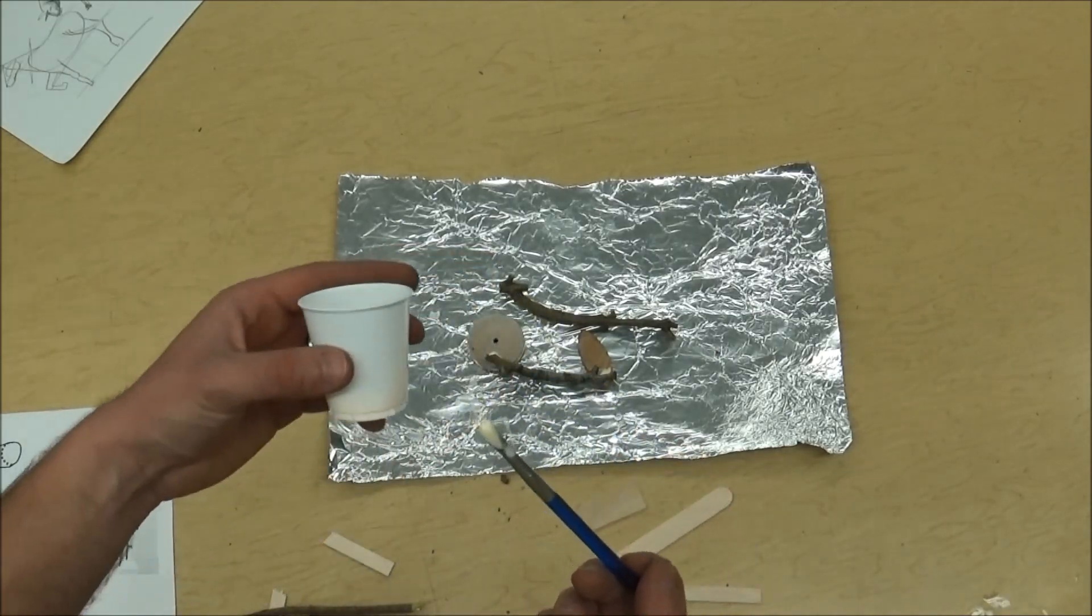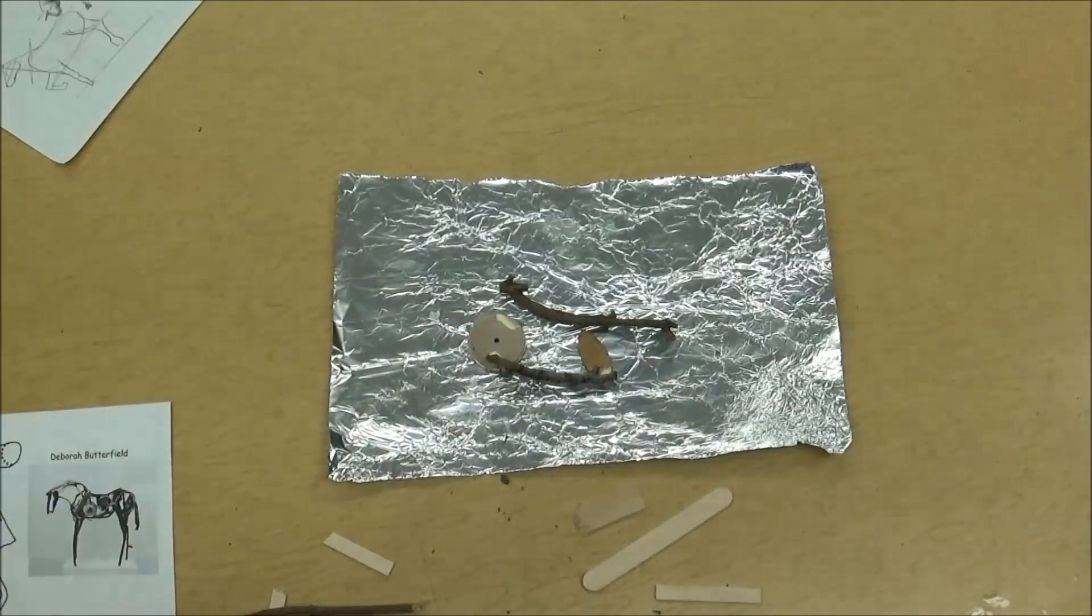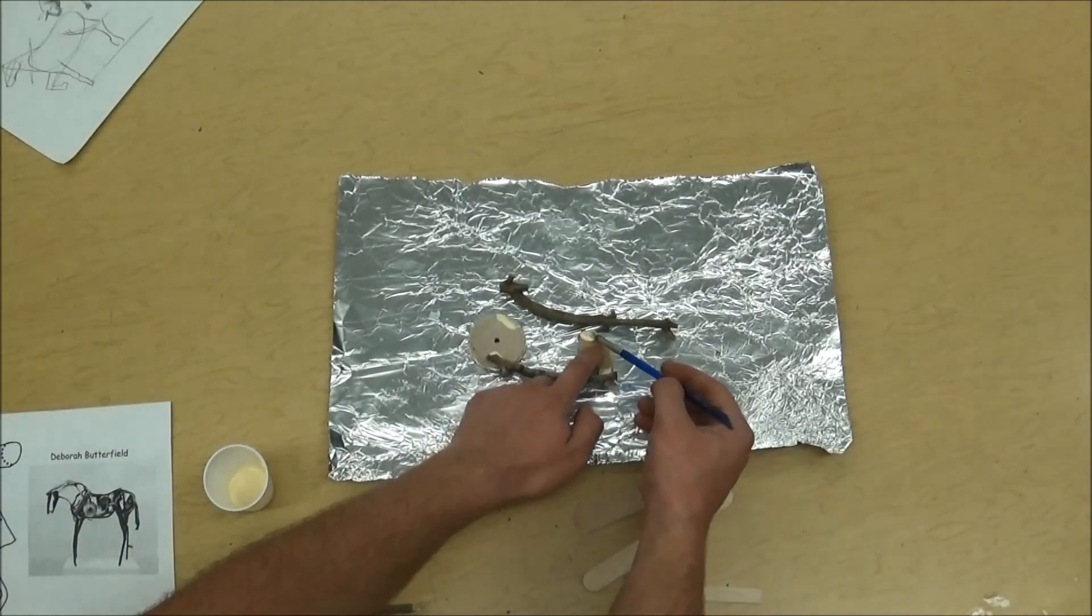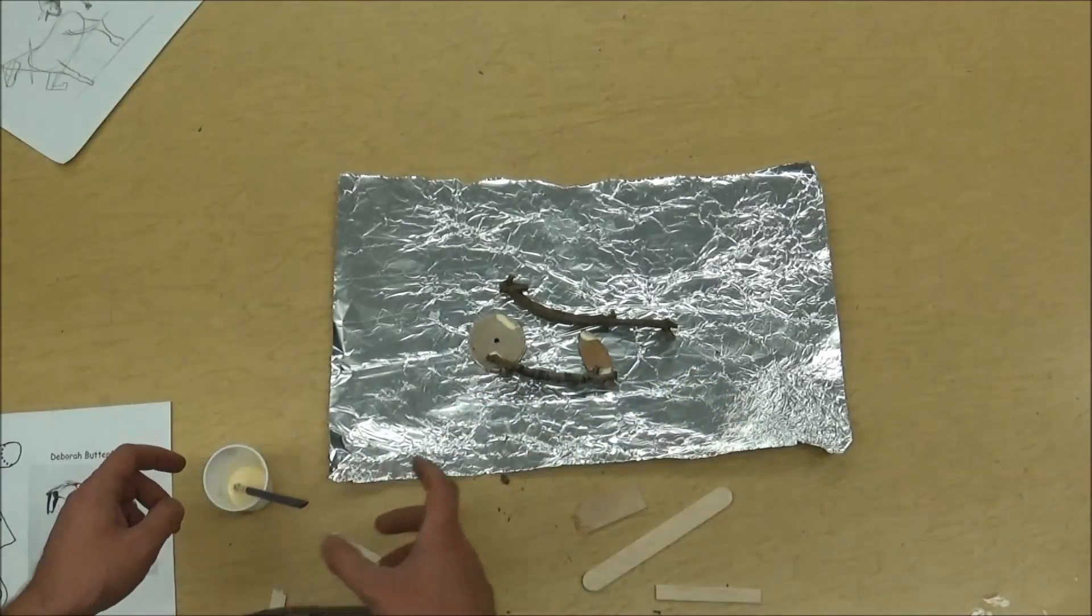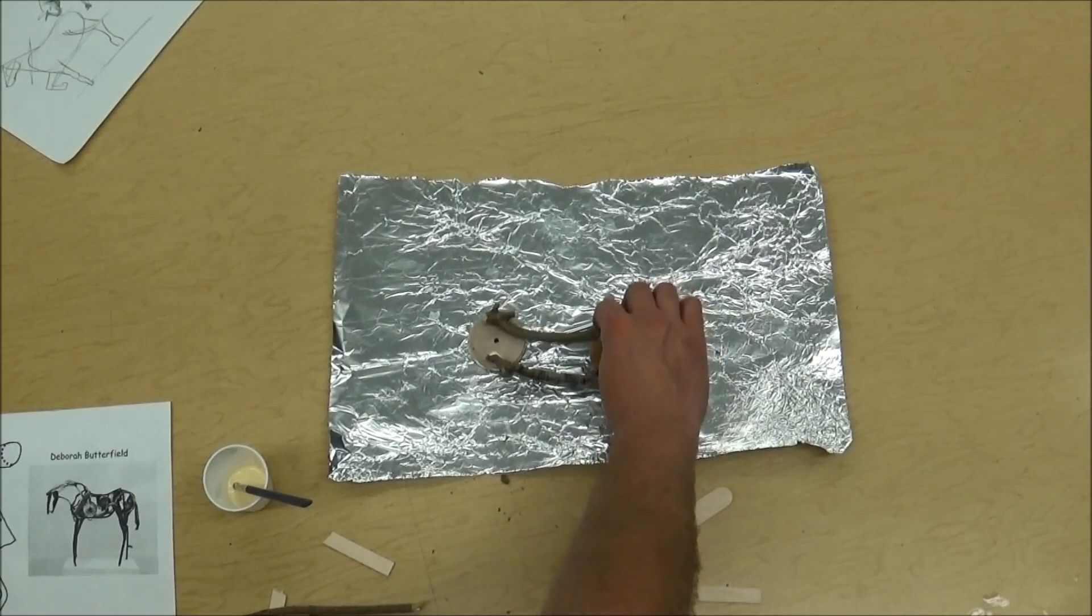So with a brush and a cup of wood glue, just kind of apply the glue as you go. Try not to dump it all over. You don't want too much. You don't want it to be a sculpture made of glue. We're just using the glue to hold the pieces of wood together. And we're going to let these dry overnight.